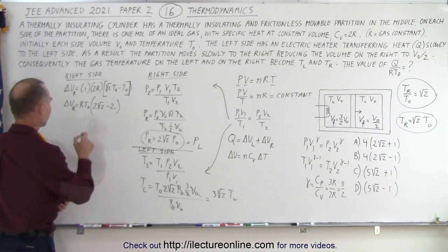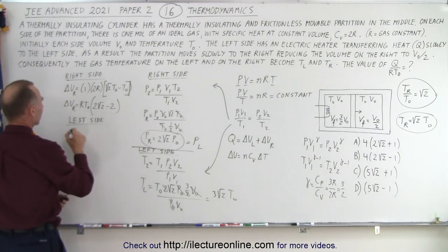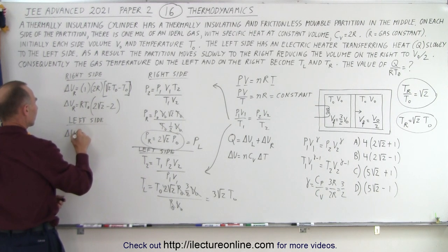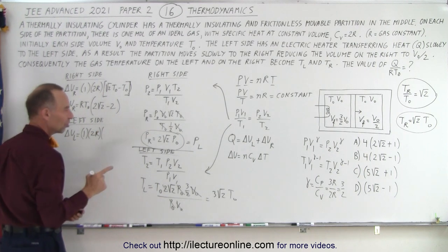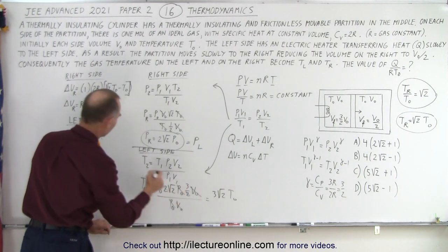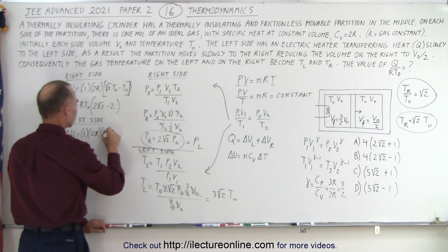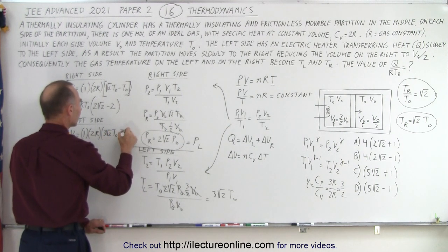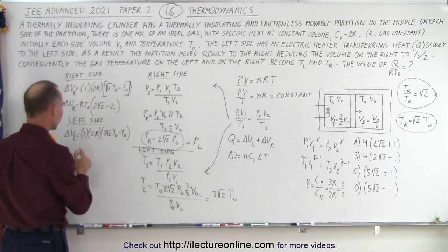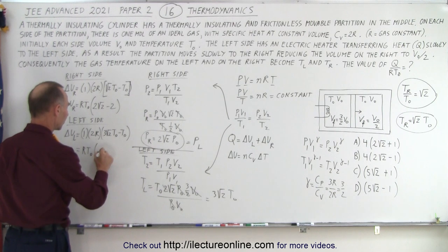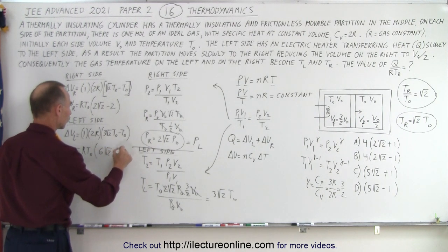We do the same for the left side. Delta U on the left equals 1 mole times C sub V (which is 2R) times the change in temperature: 3√2·T sub nought minus T sub nought. Pulling out R and T sub nought, this equals R·T sub nought times (6√2 − 2).